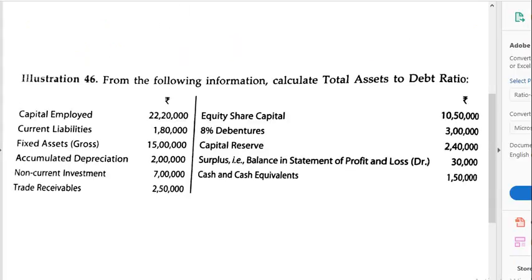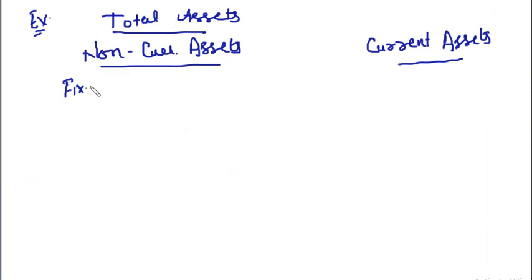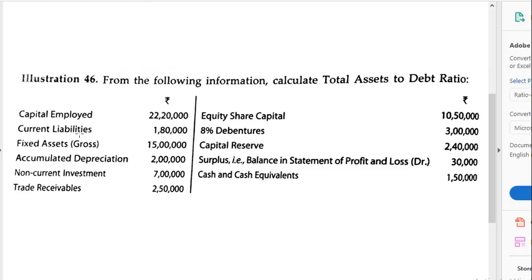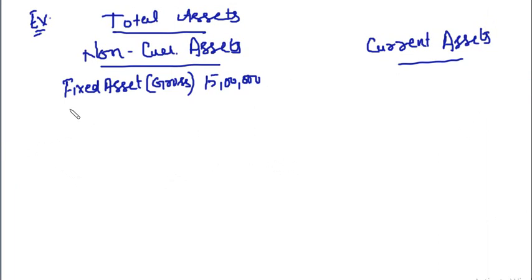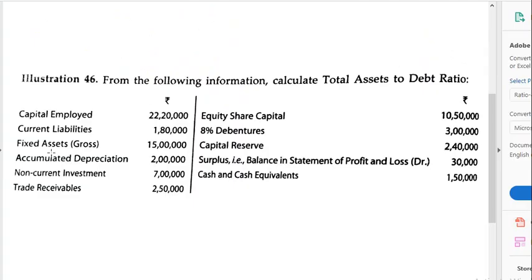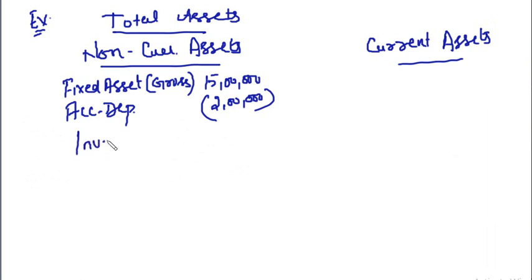Capital employed — not an asset. Current liabilities — no. Fixed assets gross 15 lakhs — yes, it is a non-current asset. Fixed assets gross is 15 lakhs. Accumulated depreciation of 2 lakhs — the gross value is given, not the net value, so we will reduce the accumulated depreciation to reach the actual figure of the fixed assets. Then non-current investments: 7 lakhs — clearly a non-current asset.